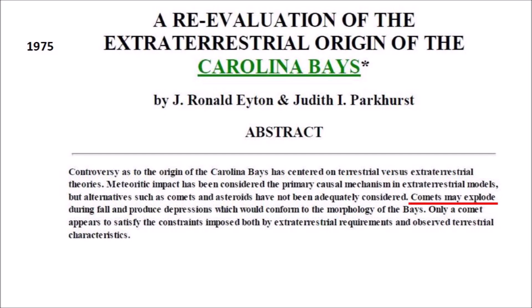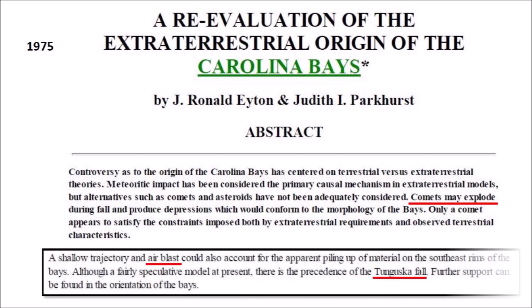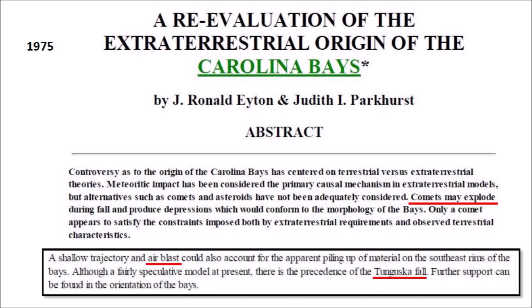A paper by Ayton and Parkhurst, published in 1975, proposed a re-evaluation of the extraterrestrial origin of the Carolina Bays. The abstract says: controversy as to the origin of the Carolina Bays has centered on terrestrial versus extraterrestrial theories. Meteoritic impact has been considered the primary causal mechanism in extraterrestrial models, but alternatives such as comets and asteroids have not been adequately considered. Comets may explode during fall and produce depressions conforming to the morphology of the Bays. Only a comet appears to satisfy the constraints imposed both by extraterrestrial requirements and observed terrestrial characteristics. The paper explains that a shallow trajectory and air blast could also account for the apparent piling up of material on the southeast rims of the Bays.